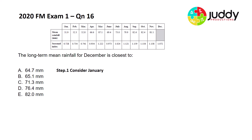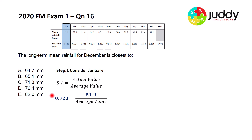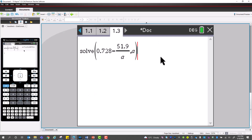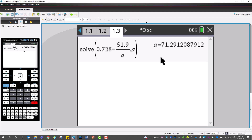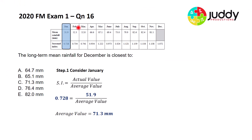First, let's consider January. The seasonal index is calculated by taking the actual value and dividing it by the average of all the months. For January, the seasonal index is 0.728 and the actual value is 51.9. Using the TI-Nspire CAS calculator, we calculate the average monthly value of the mean rainfall for the entire year. Entering the values, we get an average monthly rainfall for the year of 71.29 millimeters. Using data from February, March, April, or May would all give the same average of 71.3 millimeters.